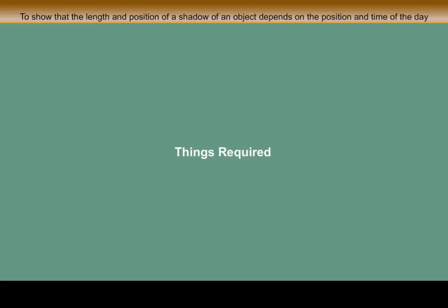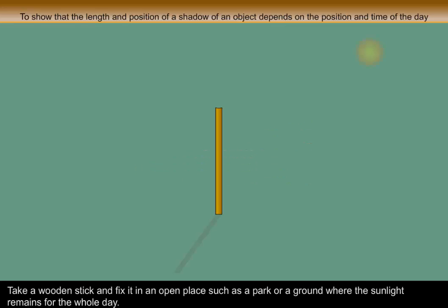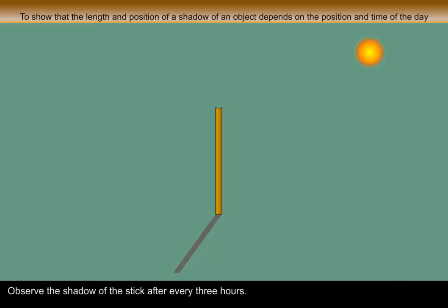Things required: a wooden stick, a measuring tape or a meter scale. Procedure: Take a wooden stick and fix it in an open place such as a park or a ground where the sunlight remains for the whole day.